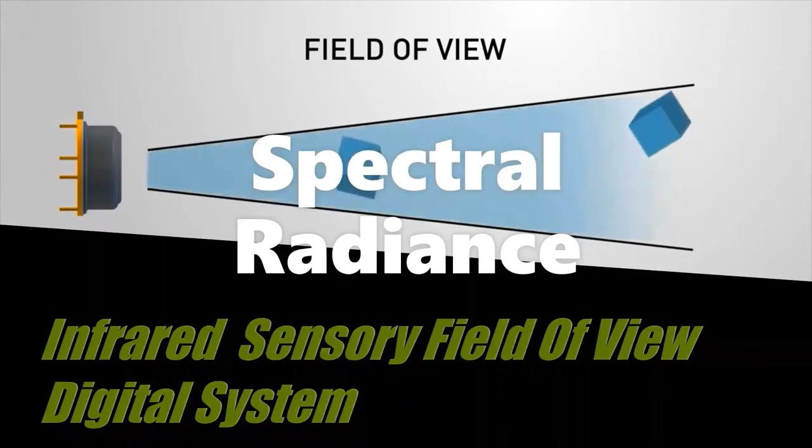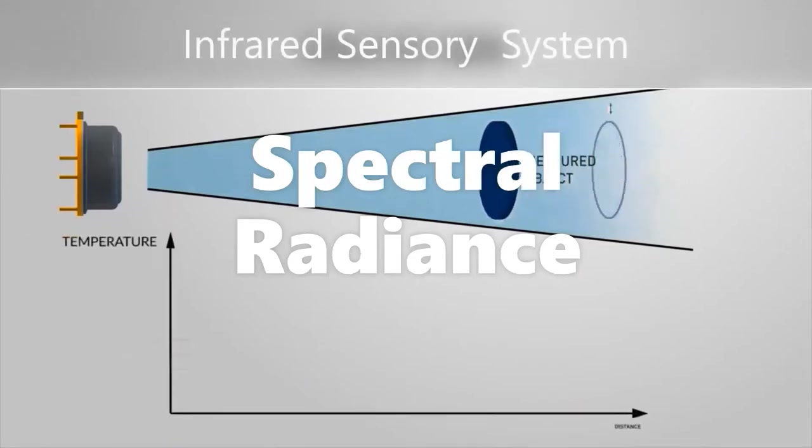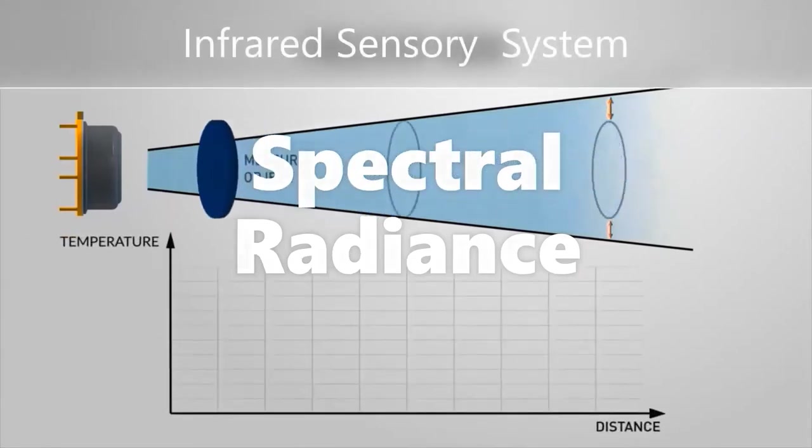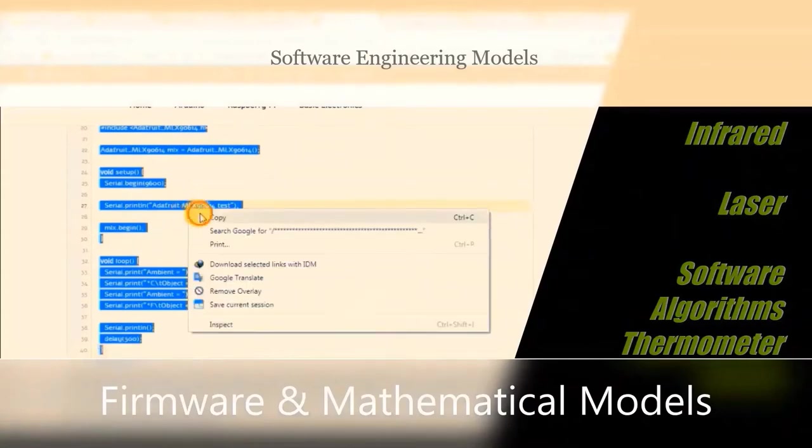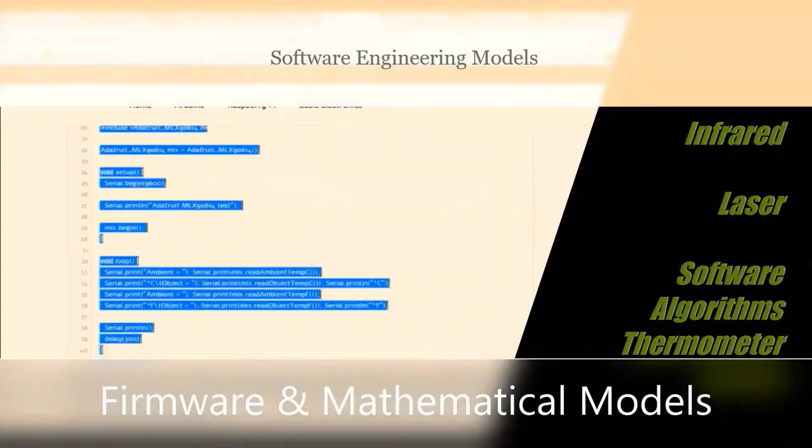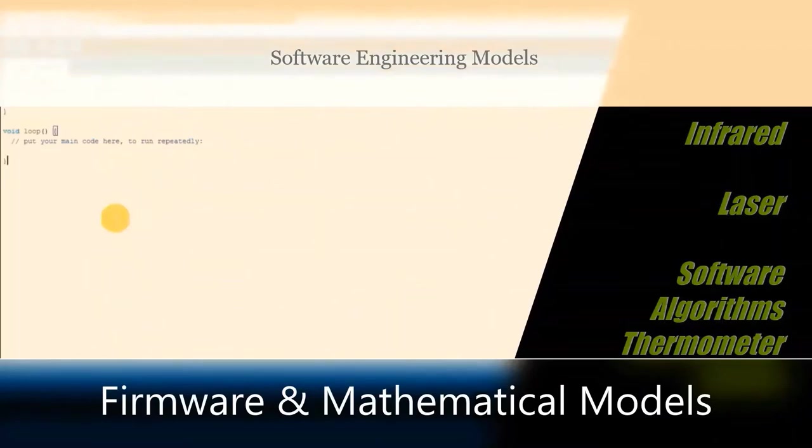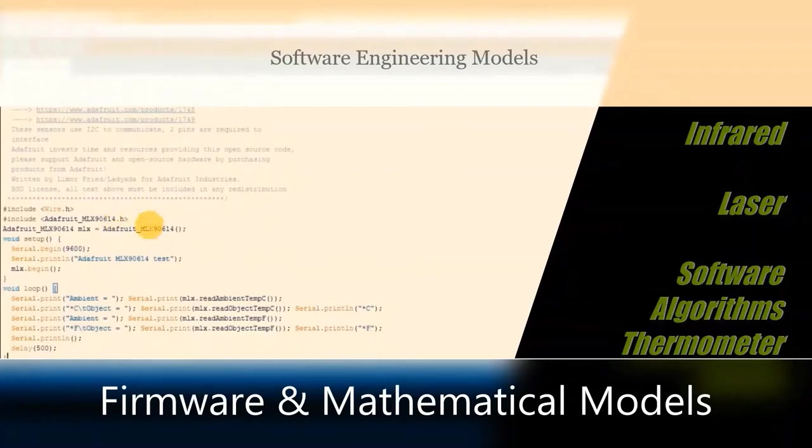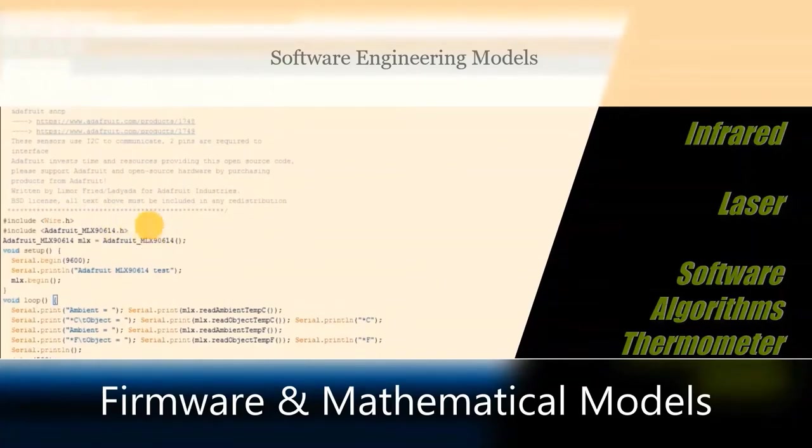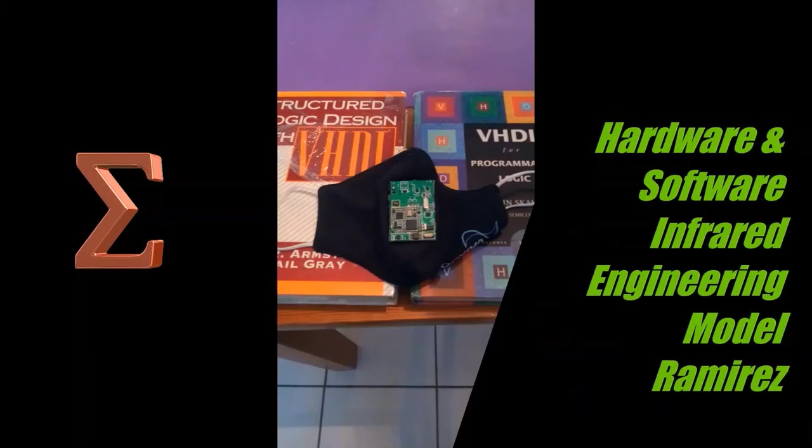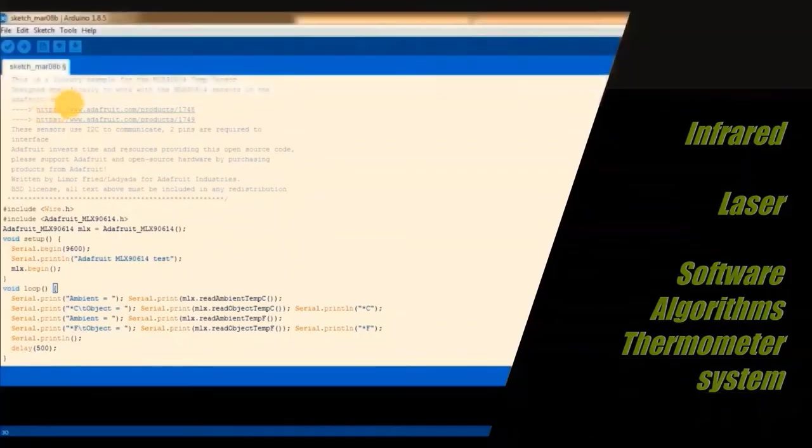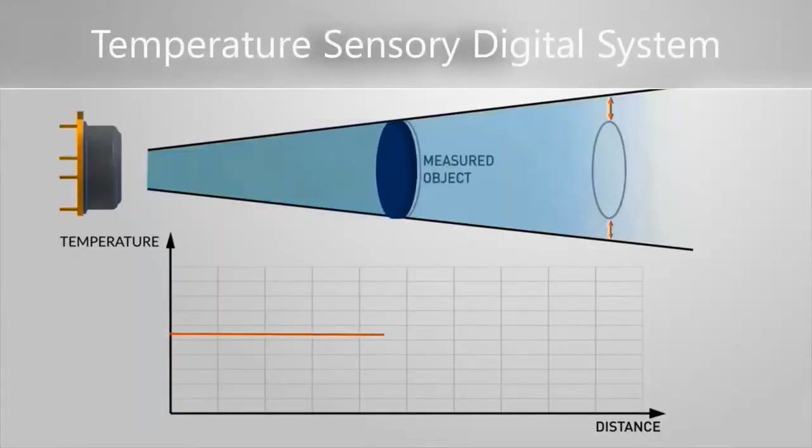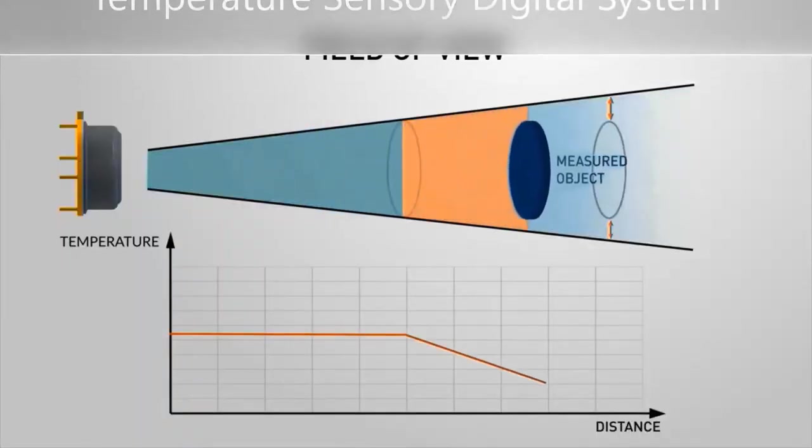Emissivity parameters define how all objects reflect, transmit, and emit energy. The emitted energy can indicate the object's temperature. When the infrared thermometer system measures surface temperature, the instrument can receive all three kinds of energy, including that caused by infrared energy reflected from other light sources.